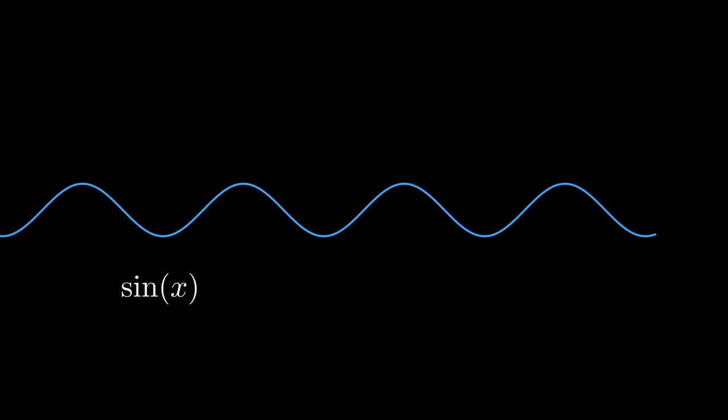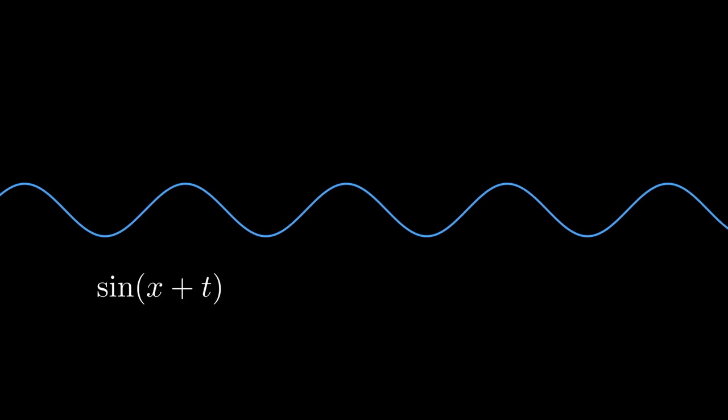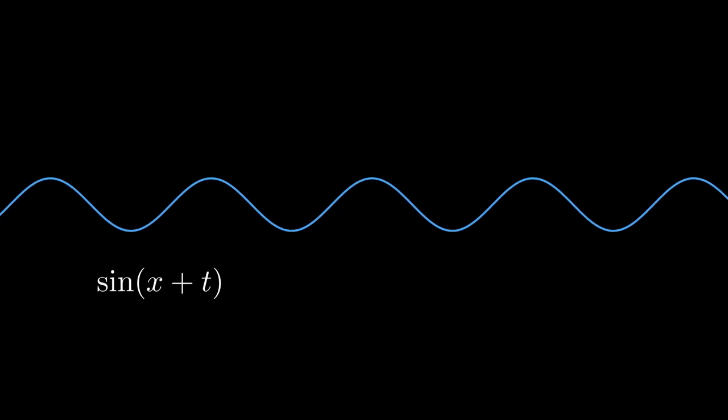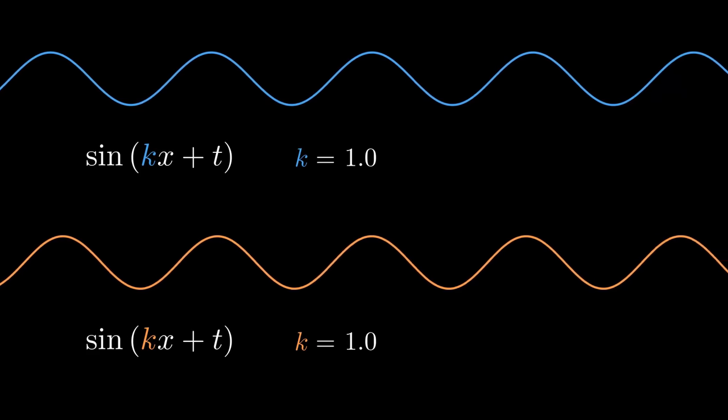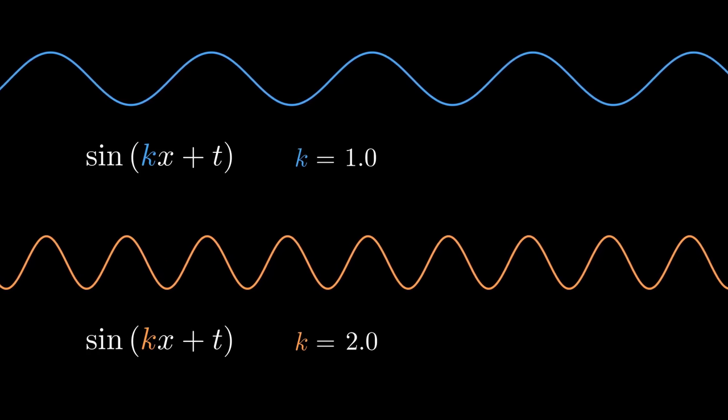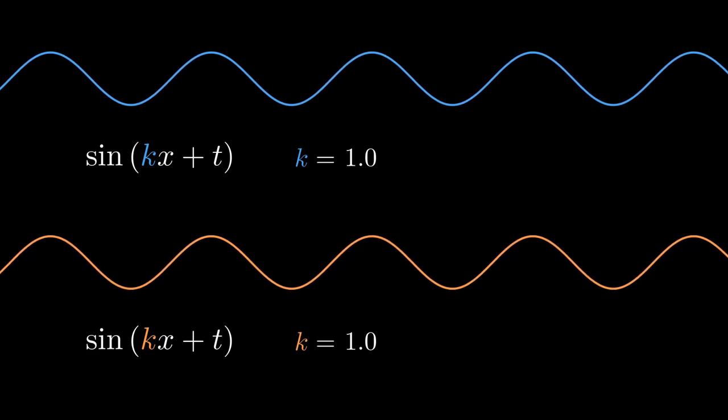We start with a refresher on how waves are expressed in math. This is a sine function. If we add time to its argument, it becomes a sine wave. If we multiply x by a number, we can control how far apart the wave's maximums are in space. This parameter is called wave number.